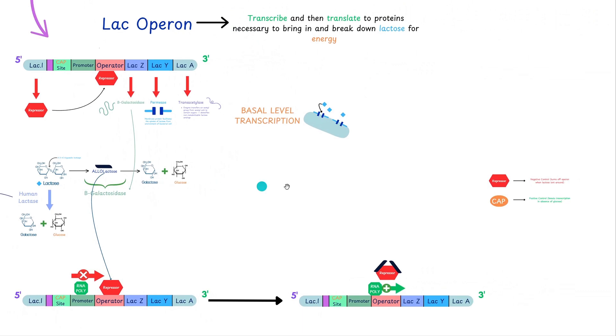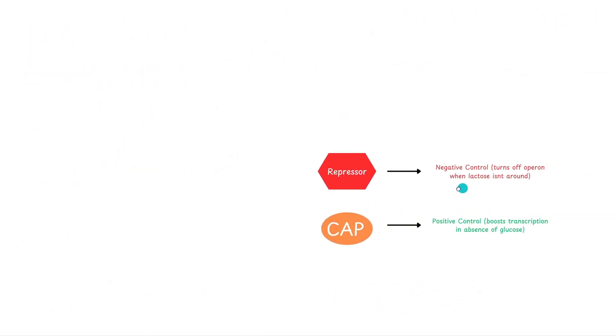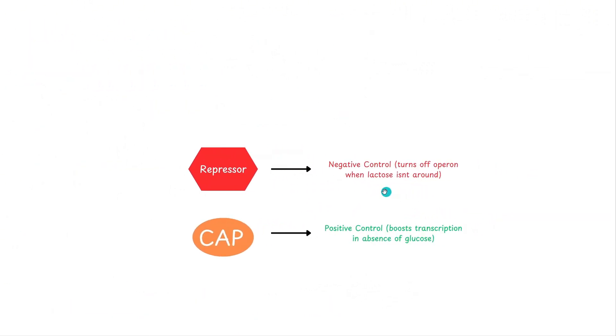So going on over here, we see two very common themes in biology, a negative control and a positive control. So the repressor acts as a negative control, turning off the operon when lactose isn't around. In contrast, the catabolite activator protein, which I'm going to talk about in the next slide, acts as a positive control, boosting transcription in the absence of glucose. I like to think of it almost like an elemental boost to the RNA polymerase when it is present.